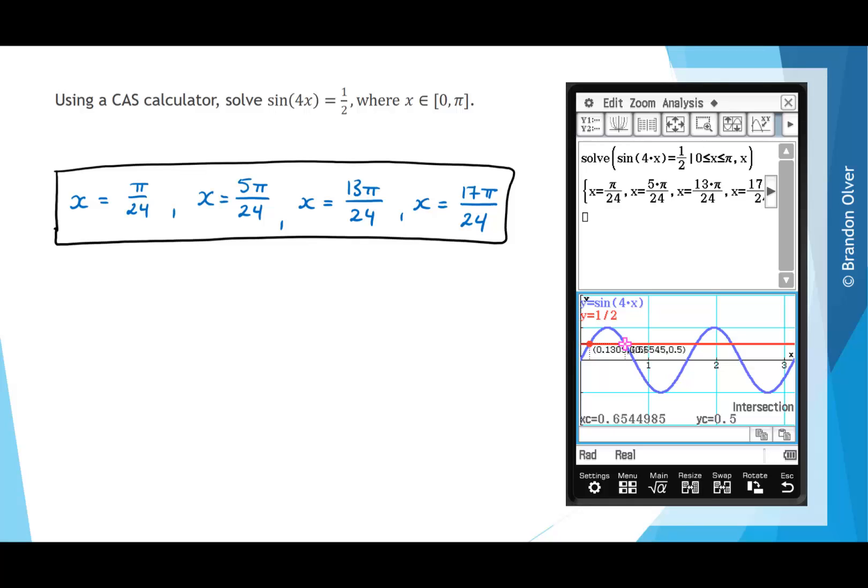Clicking the right arrow on the hard keypad will bring up the next solution. If we hit execute, that's about 0.65. Hitting the right arrow again will bring up the third solution. Hitting execute, we'll lock that on. And going across again and hitting execute shows us all the solutions.